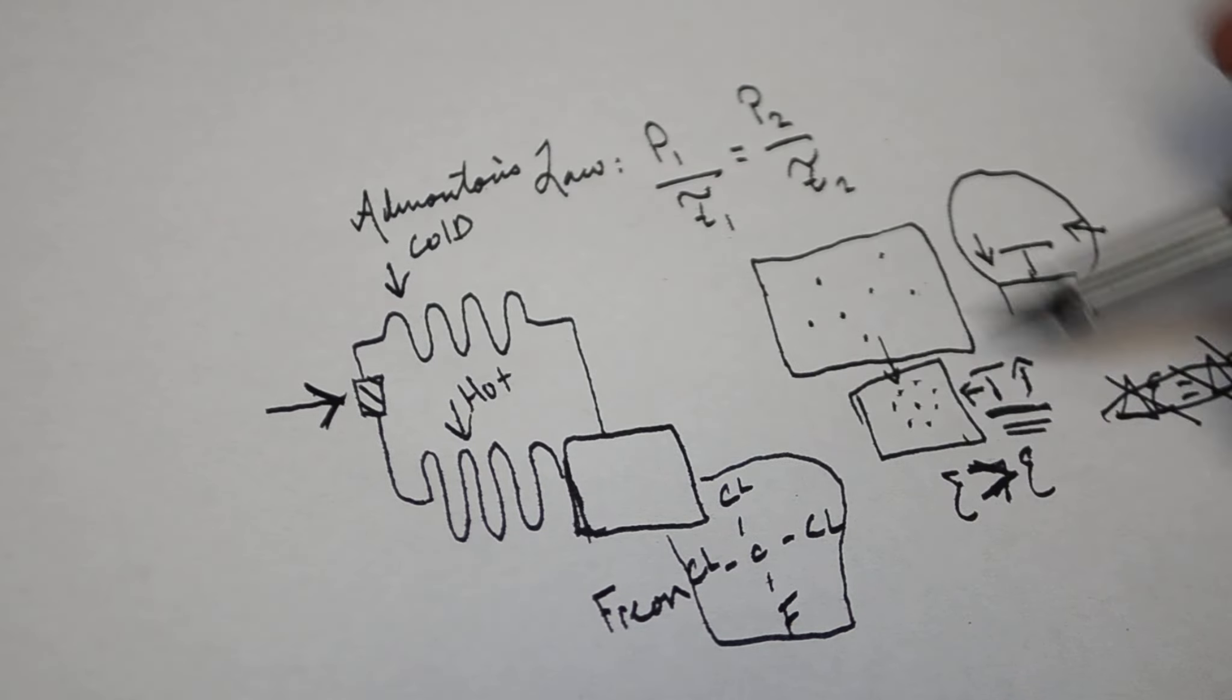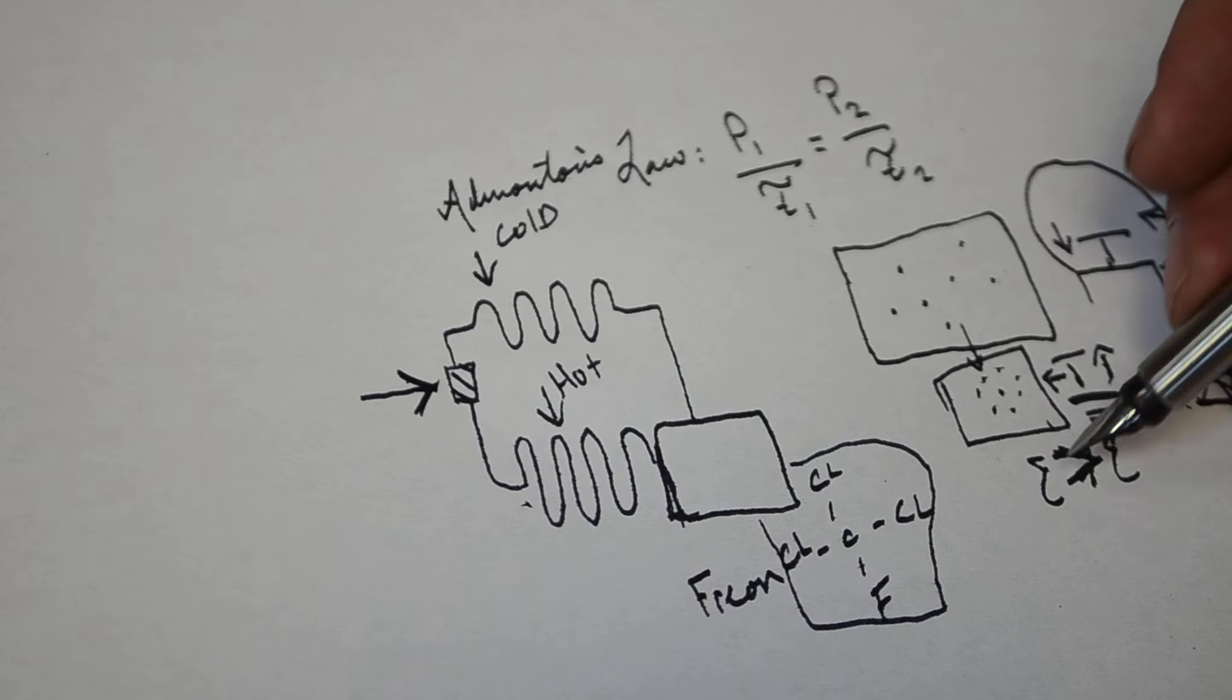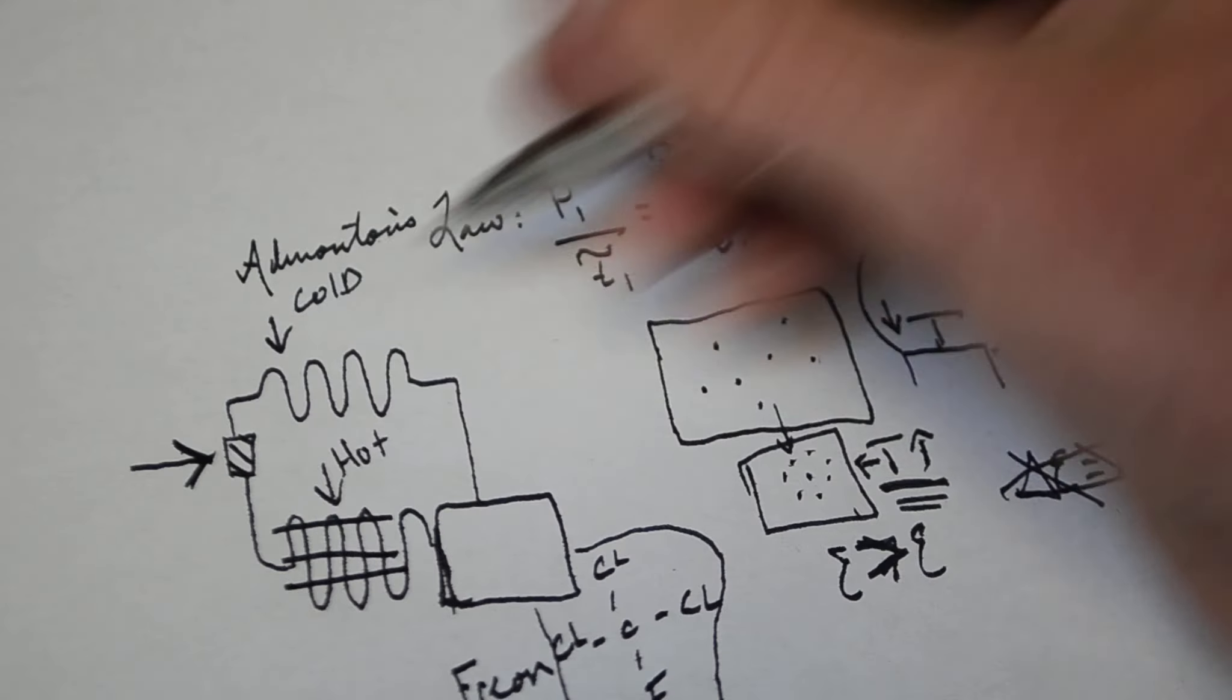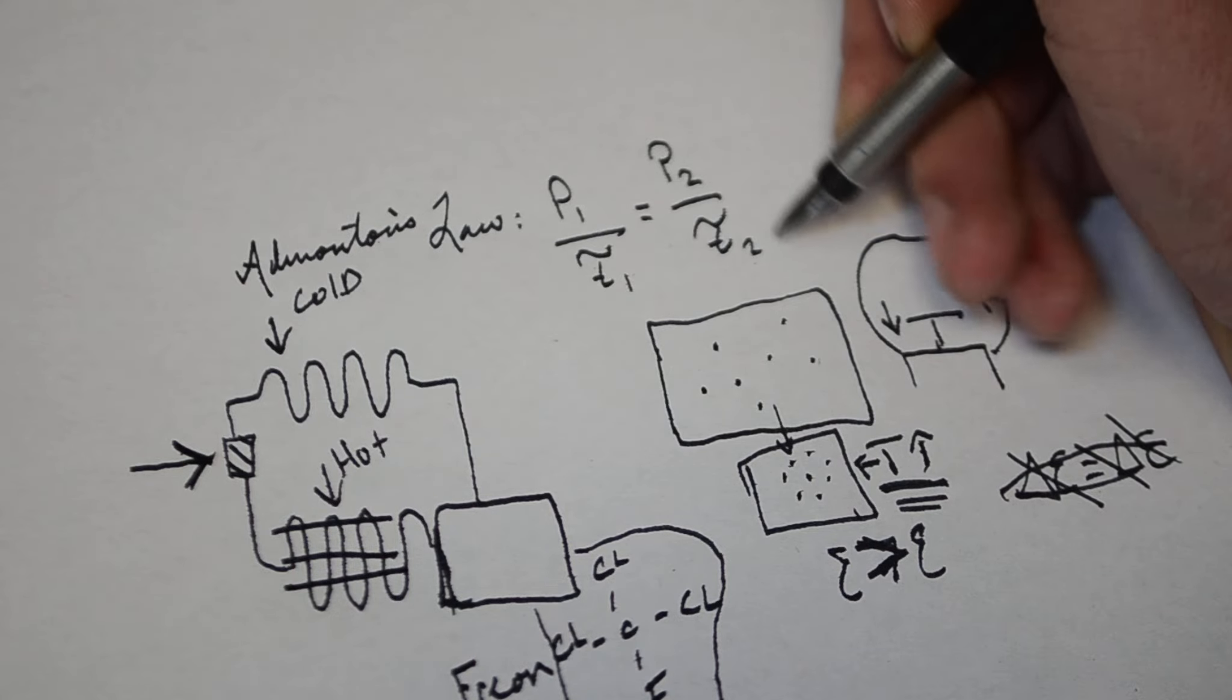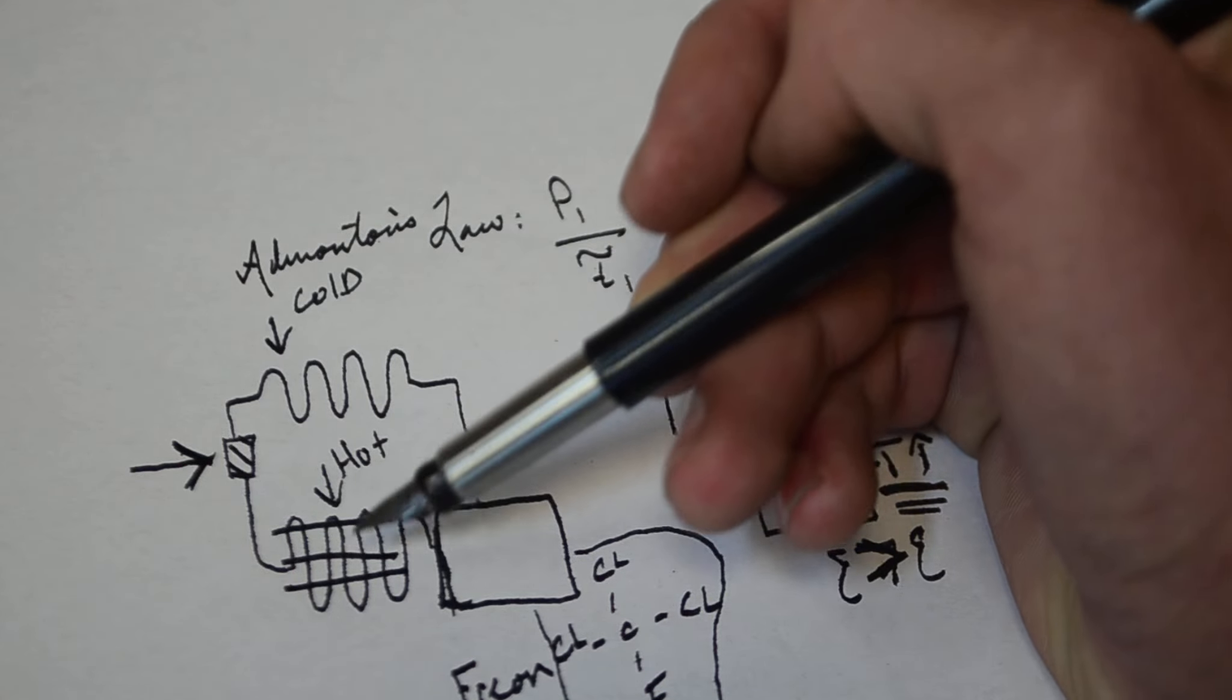This is possible because as those molecules are compressed closer together, the temperature rises and then they use a grid to dissipate that heat. When it gets to the expansion point, since the pressure got lowered, the temperature is also going to lower even more, so it'll be quite a bit more cold.